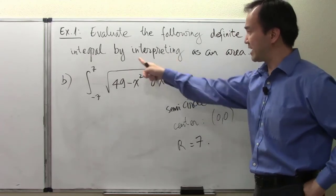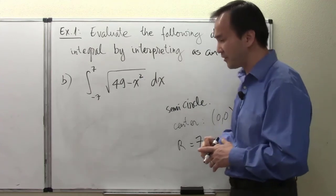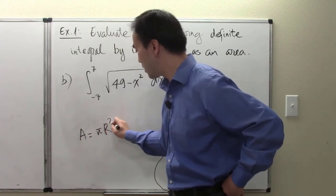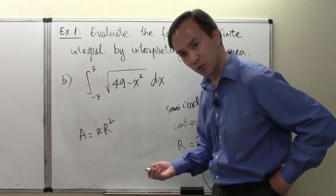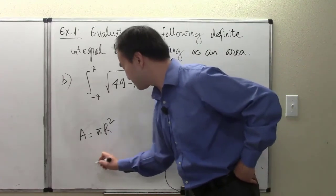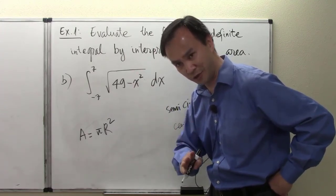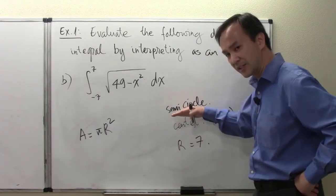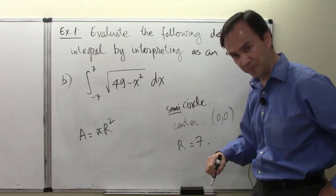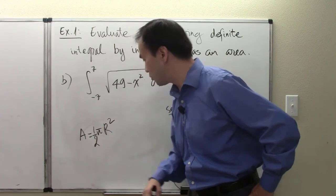The work here is a semi-circle with center at the origin and radius 7. To get the answer by interpreting as an area: the area of a circle is pi r-squared, and our radius is 7. But on the picture, it's only a semi-circle above the x-axis — only half of the circle. So we need exactly one-half times pi r-squared.